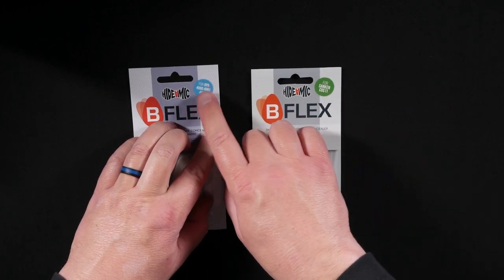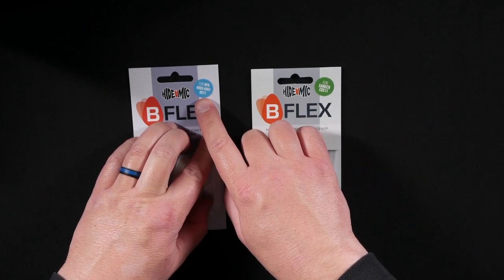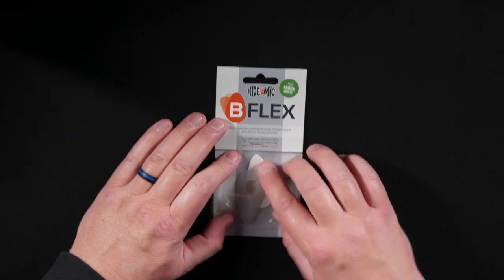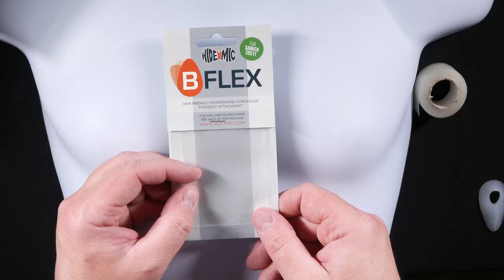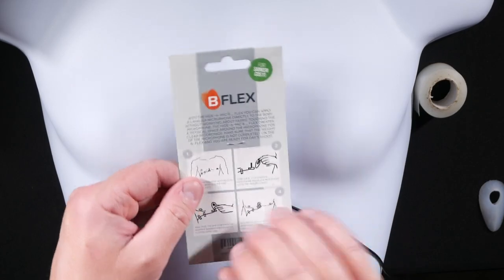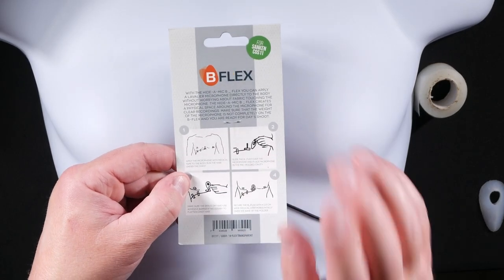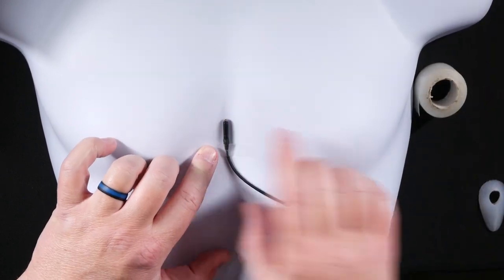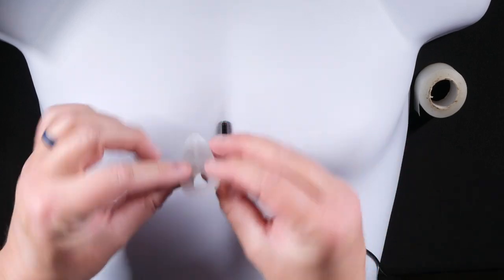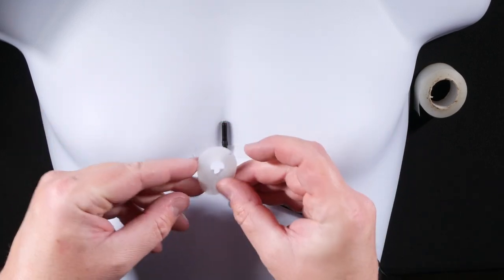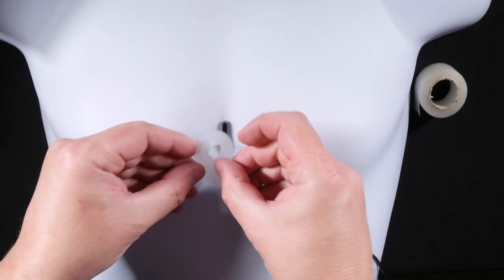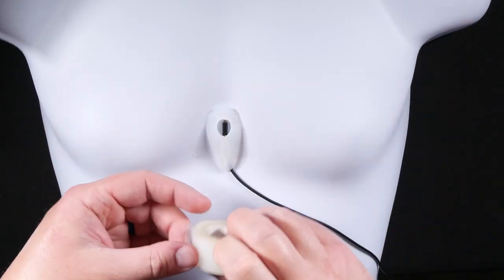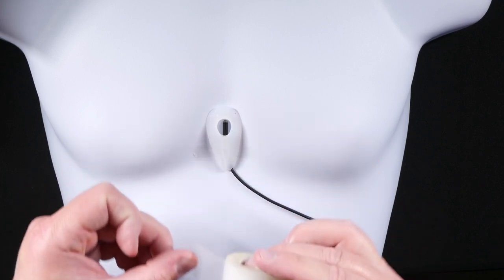This one here is for the Sanken COS-11. On the back of the B Flex packaging, it has one option for how to use it. Personally, I'm not a big fan of this method, which involves putting a little piece of tape over your lavalier microphone. And then since there's a cutout for the lavalier microphone, kind of opening it up, spreading it around, and then centering it over the lav mic, and then putting a piece of tape over the bottom to secure it.